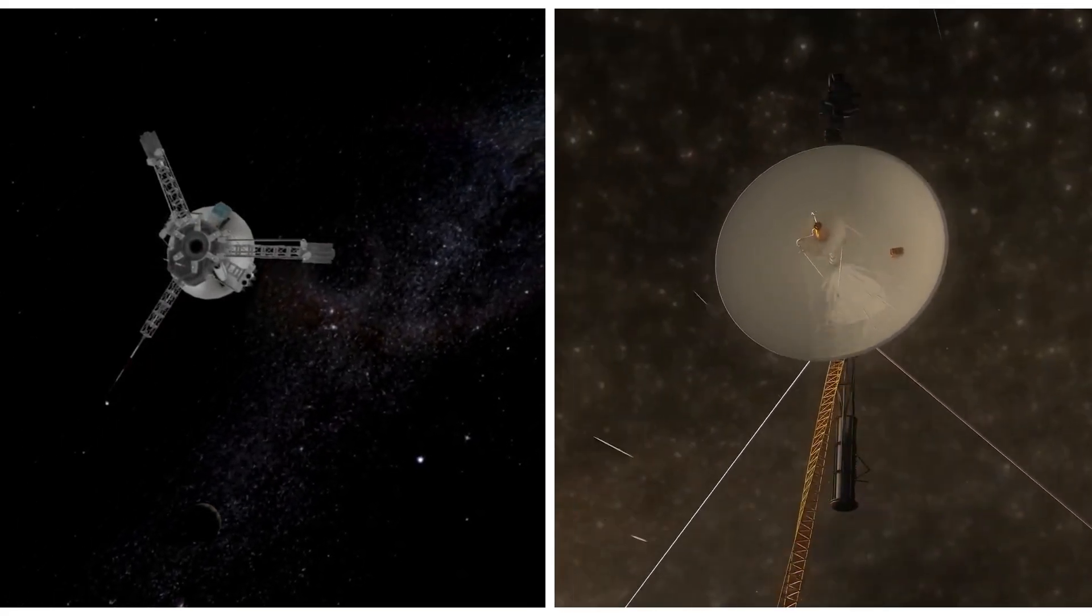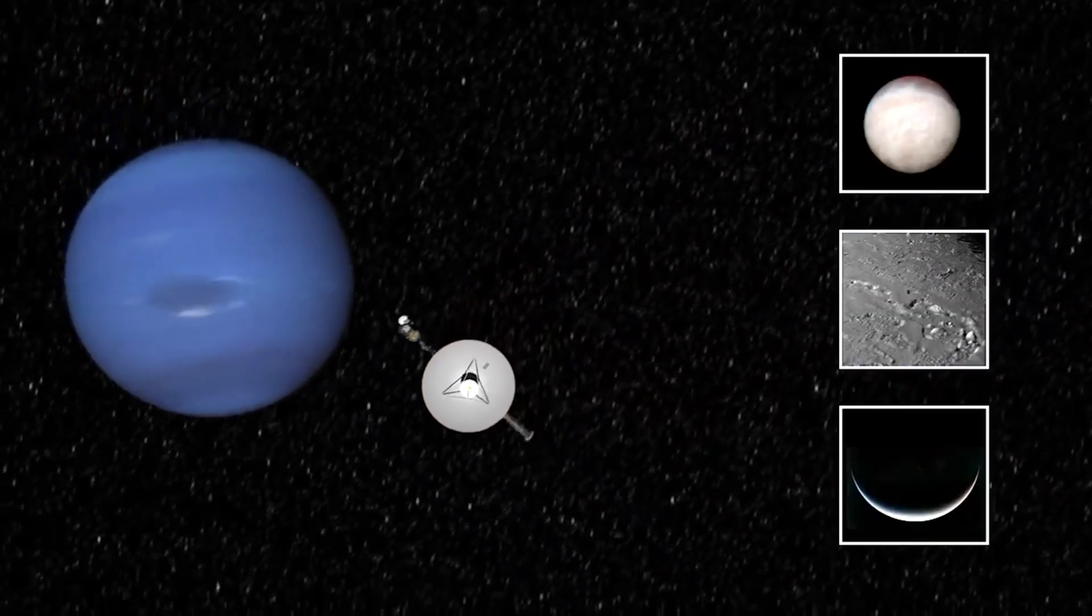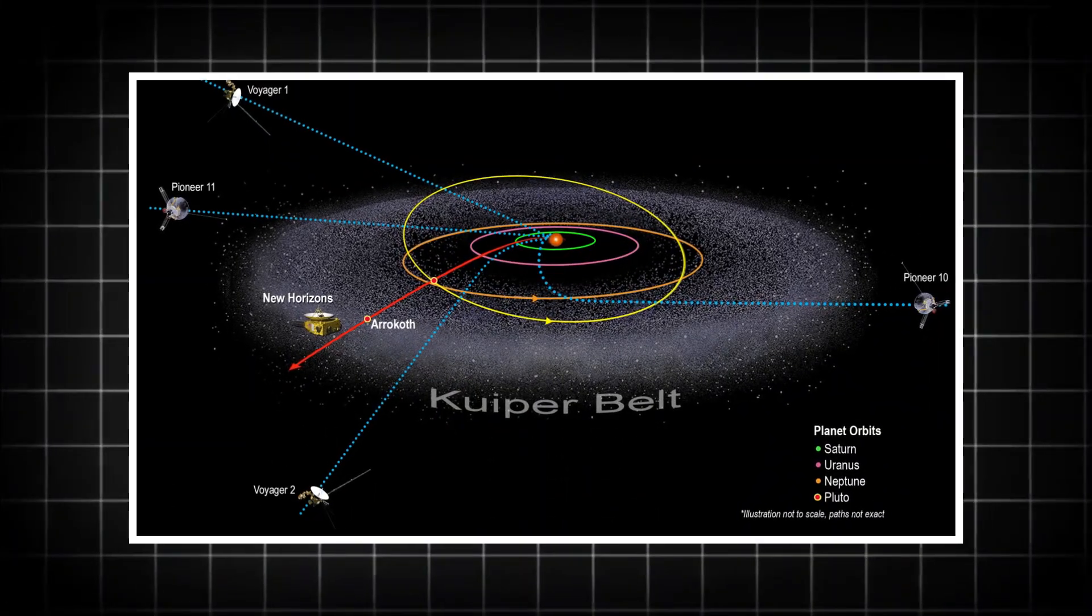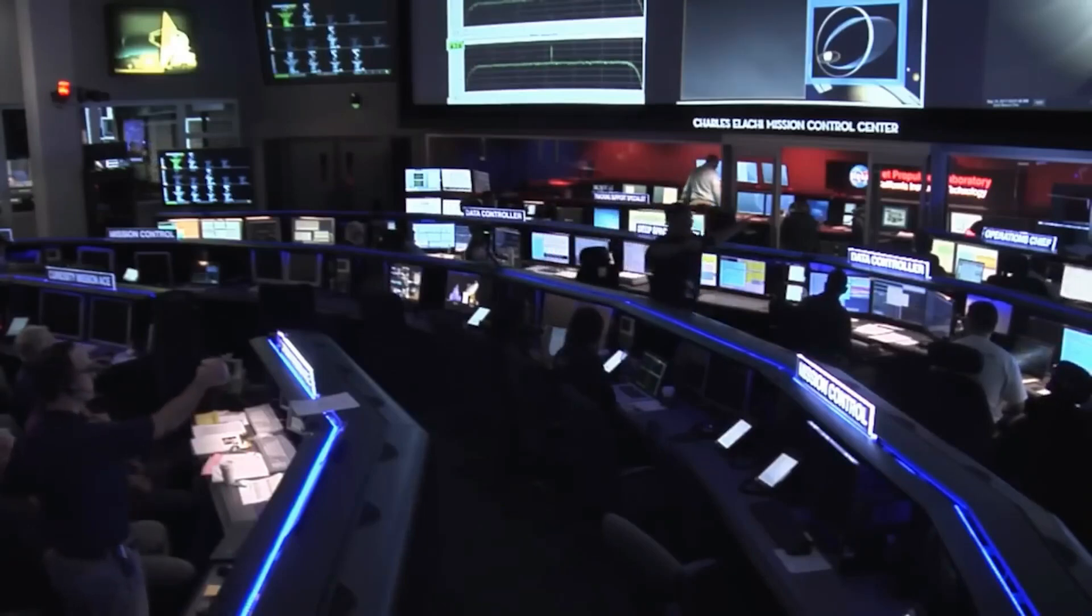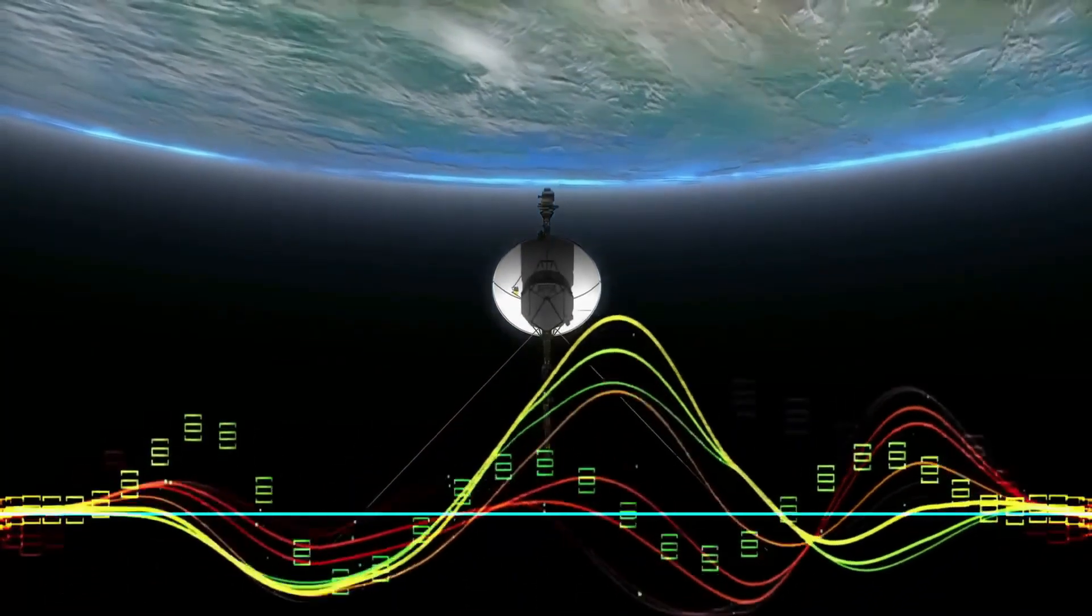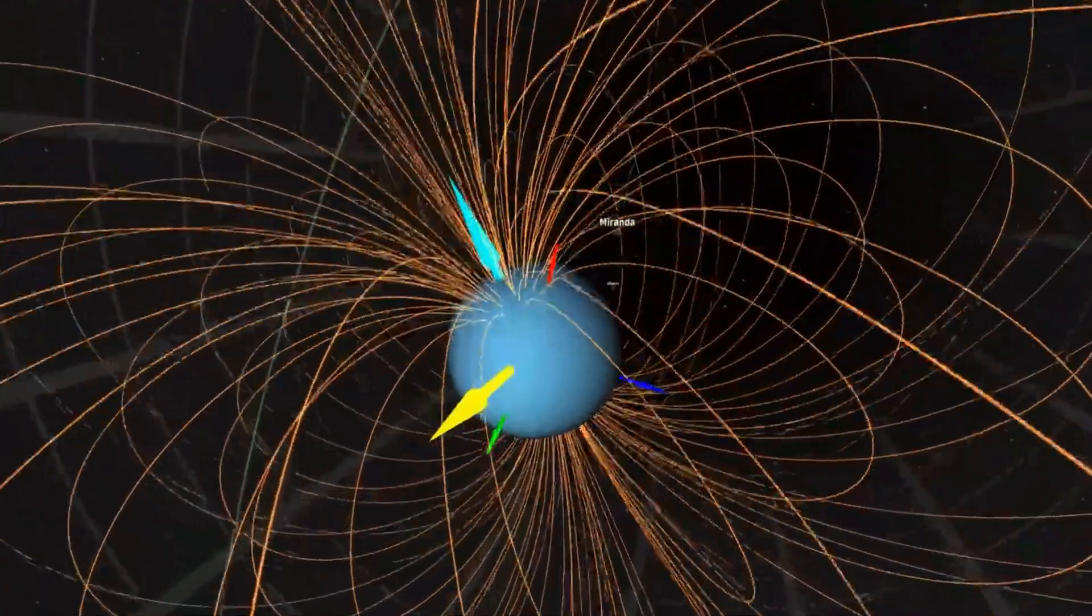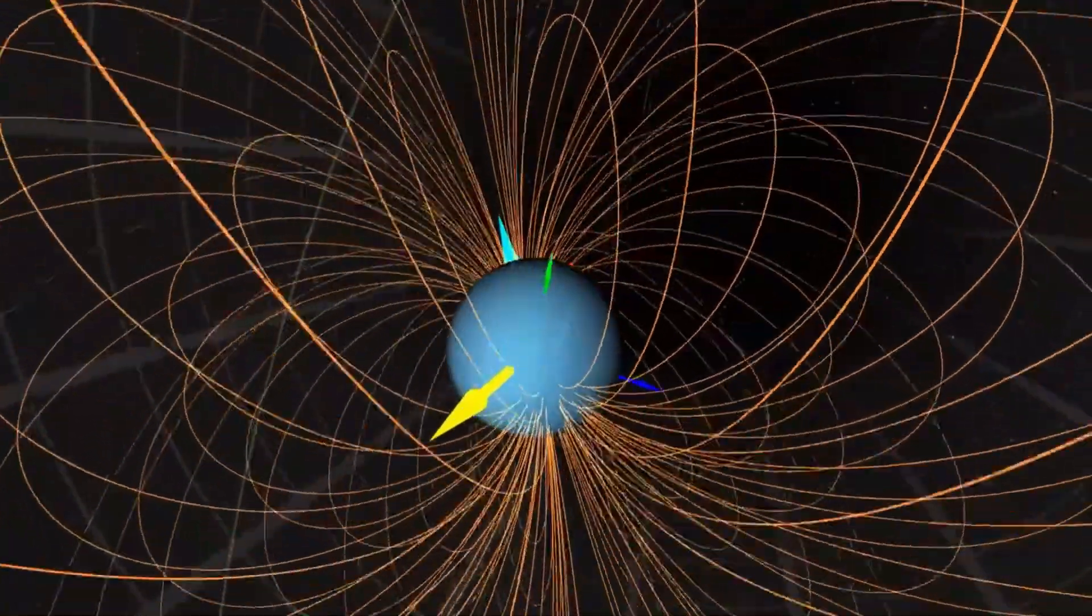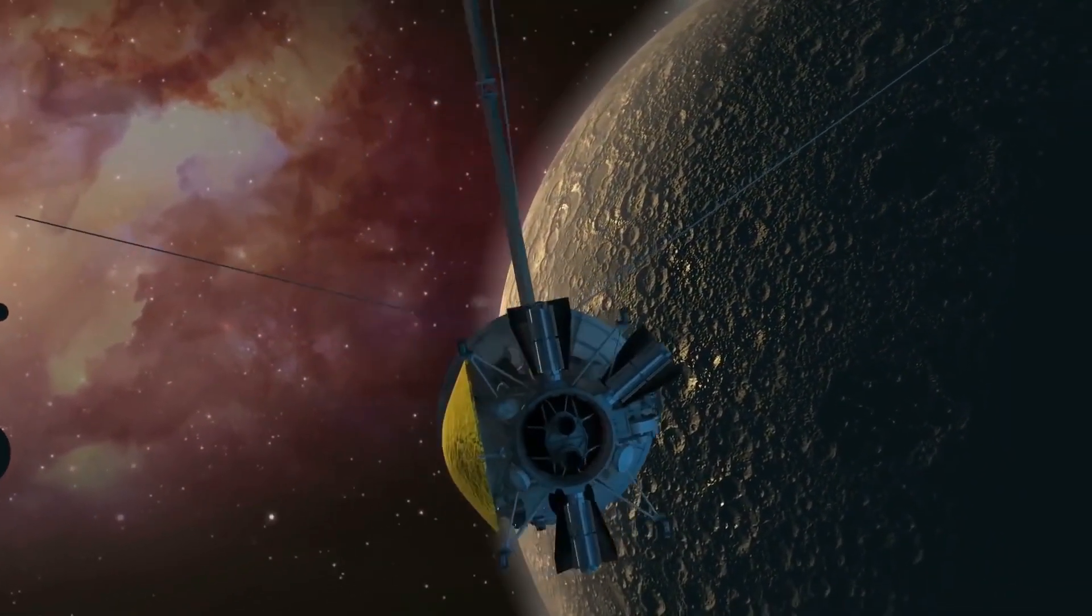Voyager's voyage into uncharted space has already surpassed every expectation, revealing the uncharted regions of the interstellar medium with unprecedented detail. But as the spacecraft pushes further into the void, it uncovers more questions than answers, an unsettling reality for scientists who thought they understood the edge of our solar system. What exactly is out there, in the vast space between the stars?